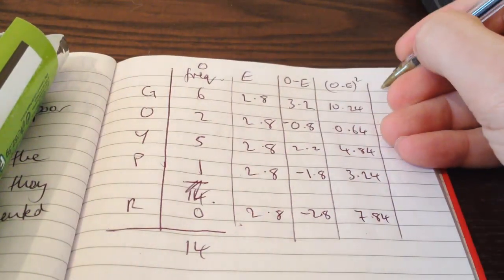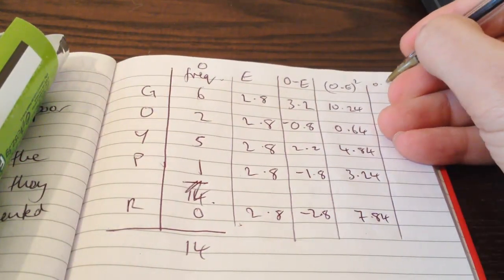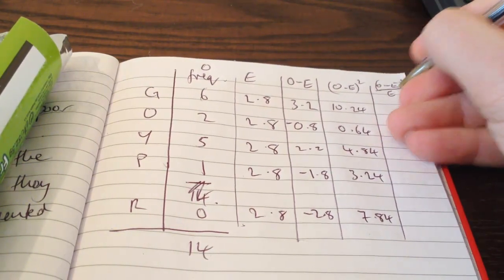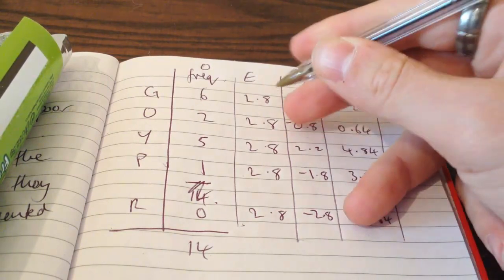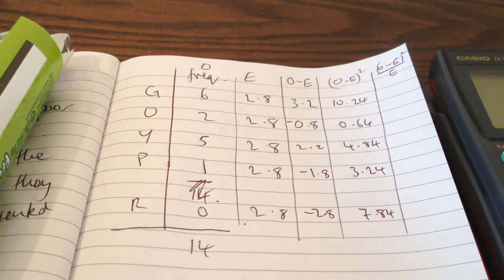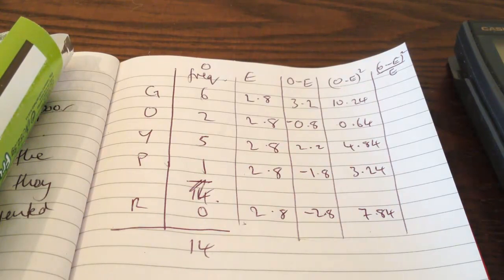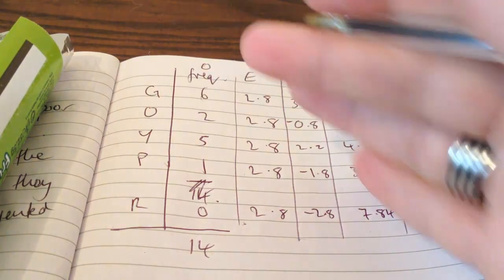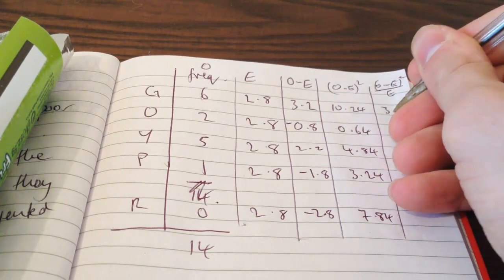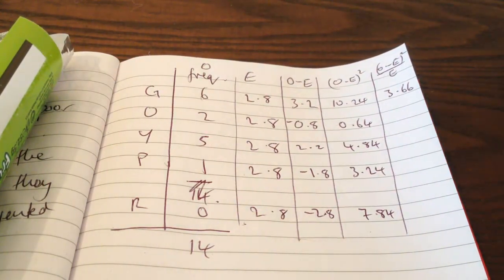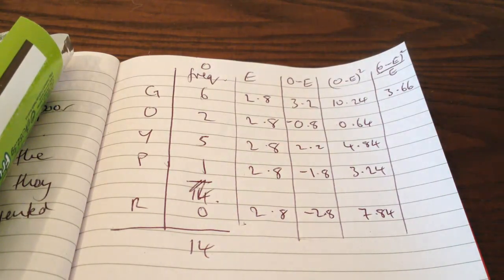So those are my observed minus expected squared. I have to divide each of those by the expected value for that sweet. So it's all the same for these, they're all two point eight. So here we go. Probably going to get some fairly unpleasant numbers here. I'm going to put these into the memory, but here I'll just put a couple of decimal places. I'm just going to pause whilst I do all of that.